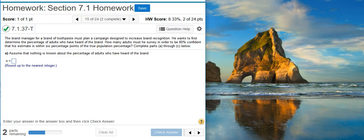Okay, Part A says we should assume that nothing is known about the percentage of adults who've heard of the brand. So the first step we're going to have to take to calculate the sample size that we need is to find the critical value.